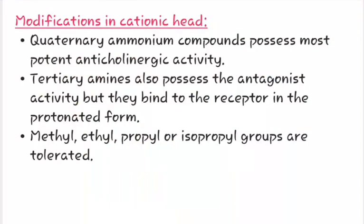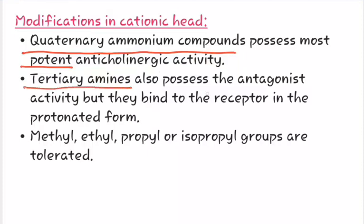Now let us start with the modifications in the cationic head. Quaternary ammonium compounds possess the most potent anti-cholinergic activity. Tertiary amines also possess antagonist activity but they bind to the receptor in the protonated form. Methyl, ethyl, propyl, or isopropyl groups are tolerated.